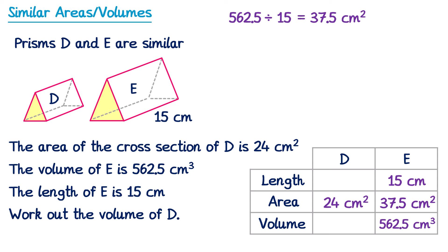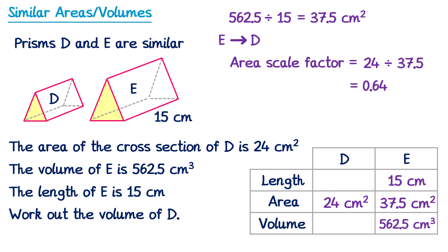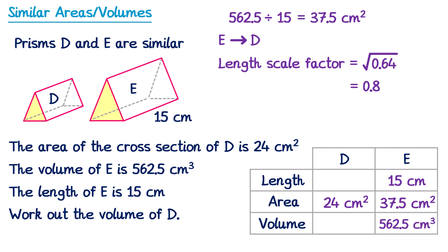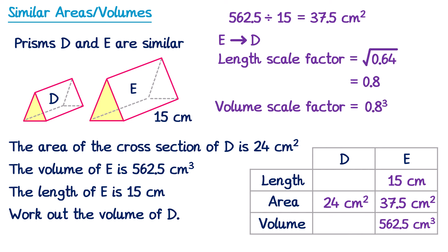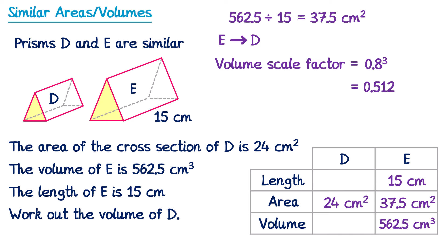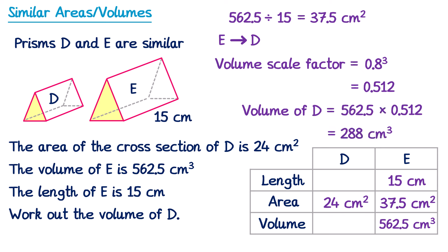Now that we have both cross-sectional areas we can work out the area scale factor going from E to D: 24 divided by 37.5 is 0.64. That makes sense since D is the smaller shape. To find the volume scale factor we first find the length scale factor by taking the square root of 0.64, which is 0.8. We then cube this to get the volume scale factor: 0.8 cubed is 0.512. The volume of D is therefore the volume of E multiplied by the scale factor: 562.5 times 0.512 gives an answer of 288cm cubed.